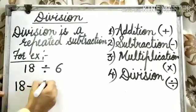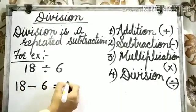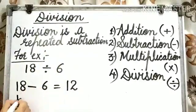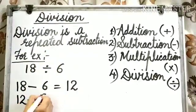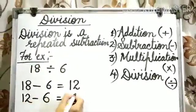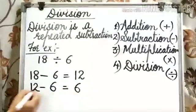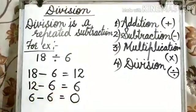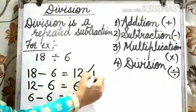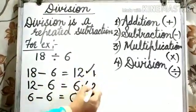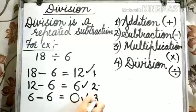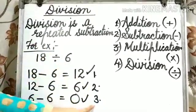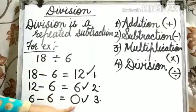18 minus 6 is equal to 12. Now, 12 minus 6 is equal to 6. Now, 6 minus 6 is equal to 0. So, first time, second time and third time. We have subtracted 6 three times from 18 to reach 0.